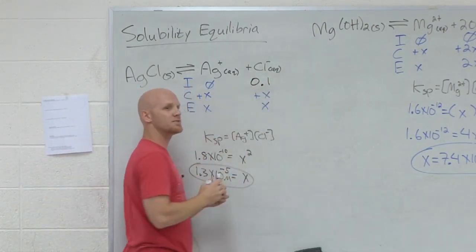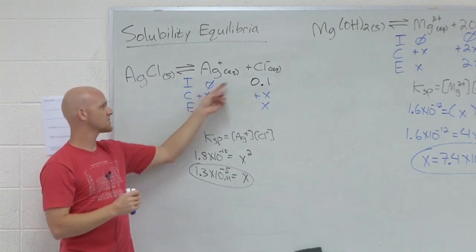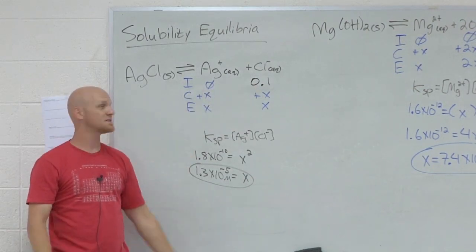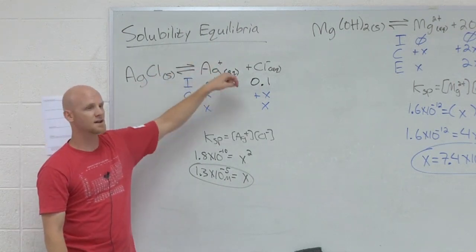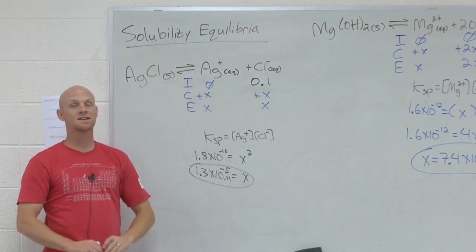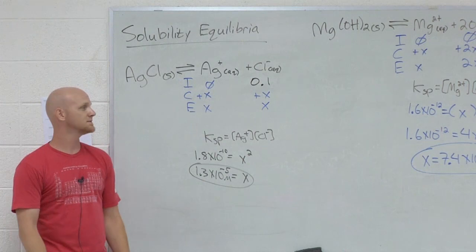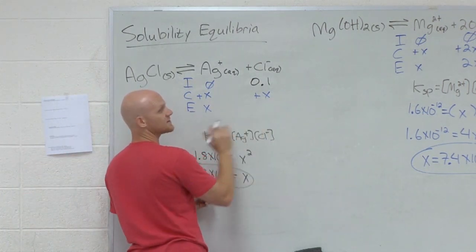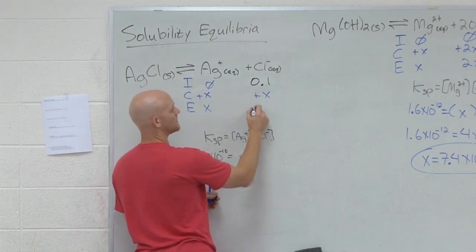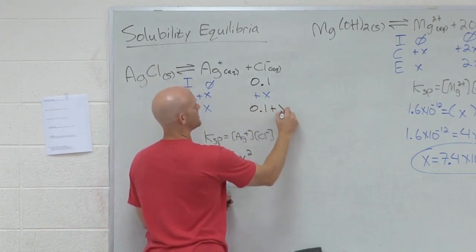Which means before the AgCl even dissociates, there's a ton of chloride already present. That's your big difference in the problem here. One of your initial concentrations in a common ion problem is not zero. Before our sparingly soluble compound even dissociates, HCl already had dissociated completely. It's a strong electrolyte. And so in this case, at equilibrium, the chloride concentration is not just X, it's 0.1 plus X.